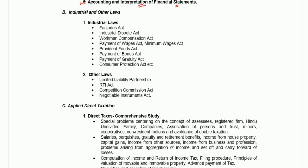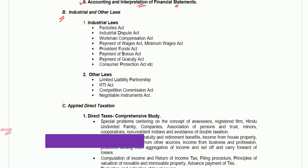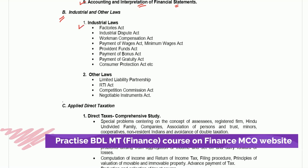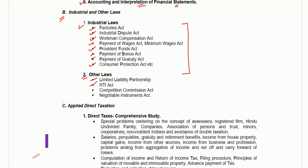Now let's go to the second one. Part B talks about industrial and other laws. In industrial law they are asking Factory Act, Industrial Dispute Act, Workman Compensation, Payment of Wages, Provident Fund, Payment of Bonus, Gratuity, and Consumer Protection Act. In other laws they are asking LLP, RTI Act, Competition Commission Act, and Negotiable Instrument Act.